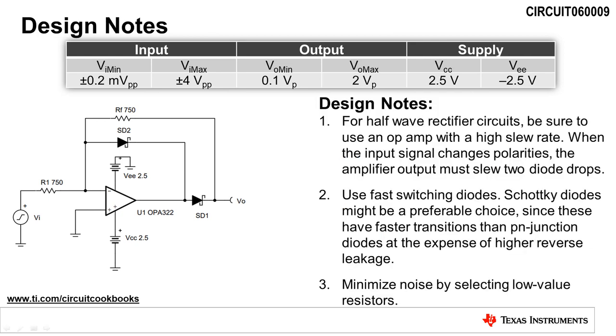When designing a half-wave rectifier circuit, there are a few design notes to be aware of. First, be sure to use an op amp with a high slew rate. When the input signal changes polarities, the amplifier output must slew two diode drops.